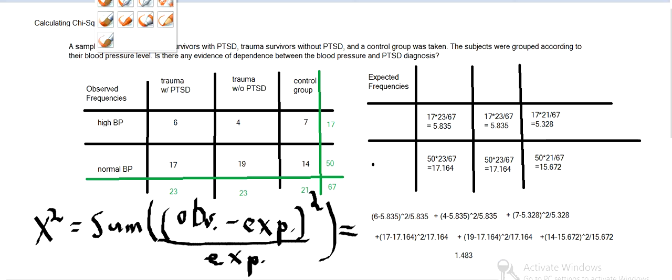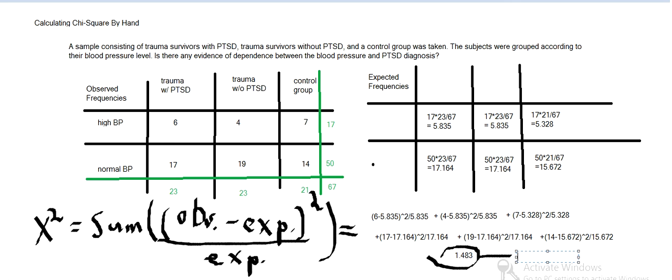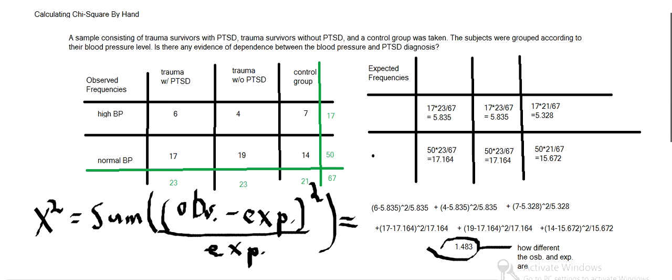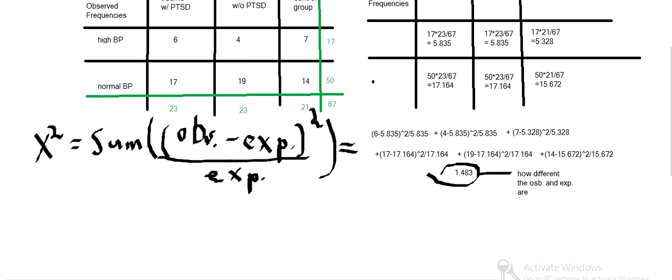And that's our chi-squared value. That measures how different the observed and expected are. And then if we wanted to carry out the full test, we'd also need df. So we've got chi-squared is 1.483. And then df is row minus 1 times column minus 1, or the number of rows minus 1. So let's see, there's 2 rows, so 2 minus 1 times the number of columns is 3. 2 minus 1 times 3 minus 1, so that's 2.